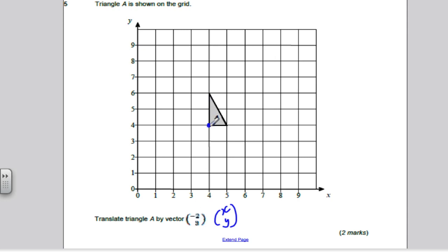The way to always do it, pick a corner, any one you want. If you go 2 left and 3 up, that corner will then be there. Now you can just draw in your shape, because all the other corners must move in the same way. That shape would then be there.